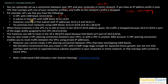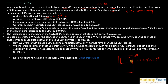A subnet in that VPC has a CIDR block of 10.0.1.0/24. This VPC supports 2 to the power of 16 IPs. Within it, you have created a subnet with an IP range of 10.0.1.0/24, meaning 2 to the power of 8 — that's 256 IP addresses. The IP range for this subnet would be 10.0.1.0 to 10.0.1.255.